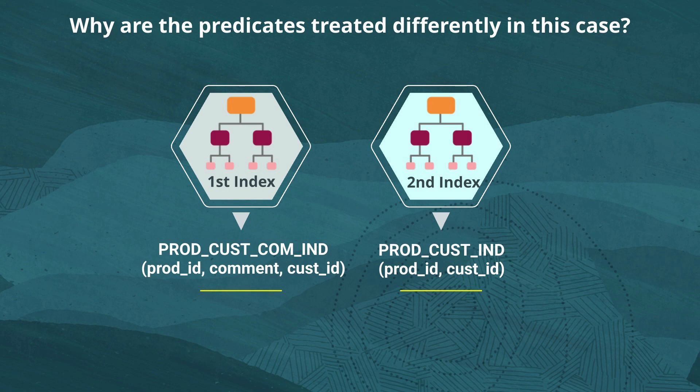So we know that the predicate information is being treated differently across the two indexes, but why is that? We need to go back and look at how the indexes have been defined. If we look at the prod cost com index, we'll notice that although it contains all three columns needed for the query, the two columns that have where clause predicates — prod ID and customer ID — are not the leading edge of the index. Only the product ID is. They're separated by the column we need for the select clause. Whereas on the second index — the index that is being chosen — both the product ID and customer ID are the leading edge of the index, which is why they can both be used as access predicates.